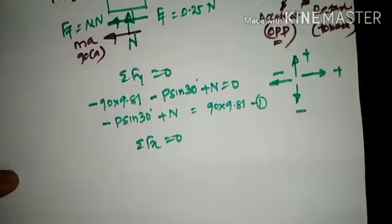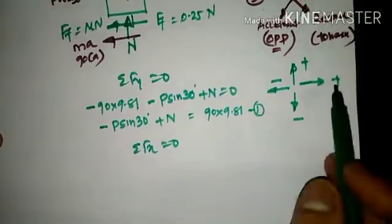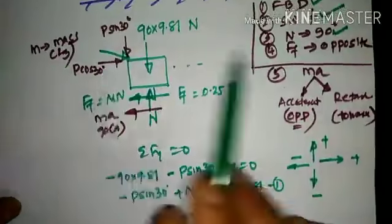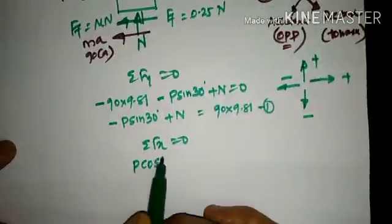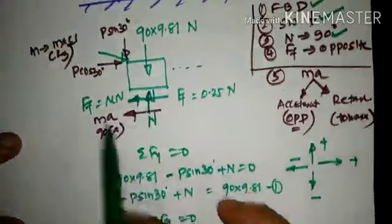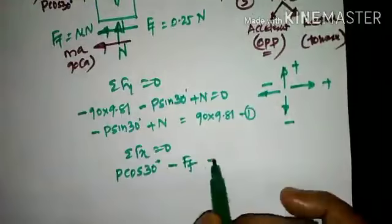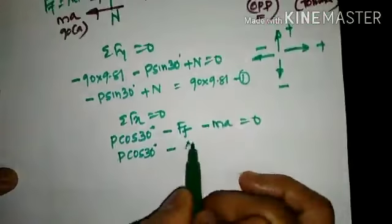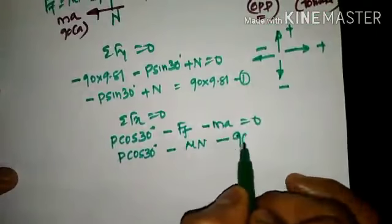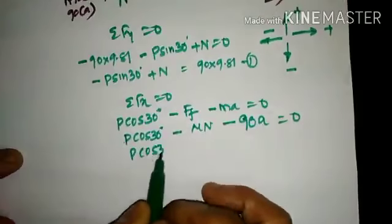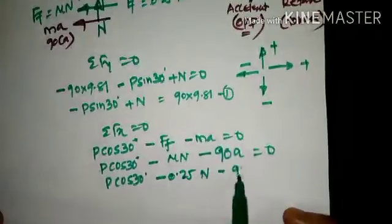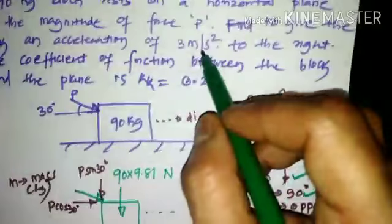Now considering ΣFx = 0: right-hand side forces are positive, left-hand side forces are negative. The horizontal component P cos 30° is on the right-hand side, so it is positive. Frictional force is on the left, so it is −Ff. Inertia force is on the left, so it is −Ma = 0. Substituting: P cos 30° − 0.25N − 90 × 3 = 0. The acceleration is positive 3 m/s² because this is a case of acceleration; for retardation it would be negative.